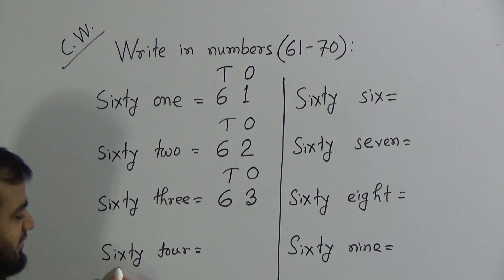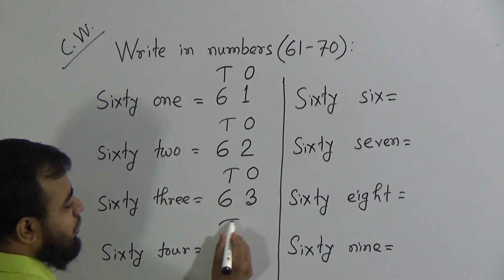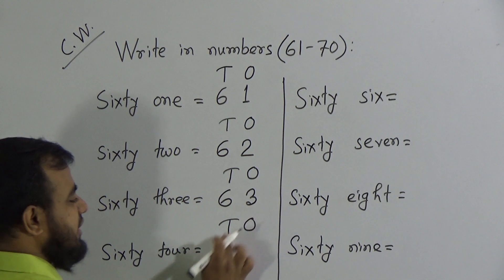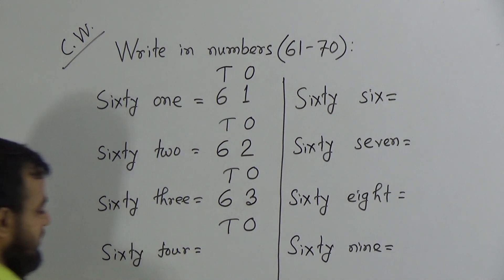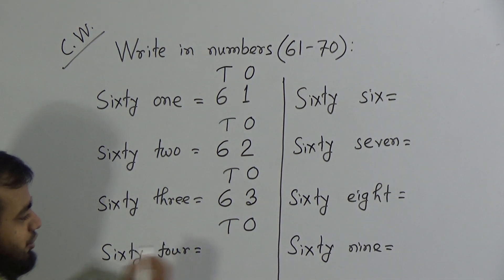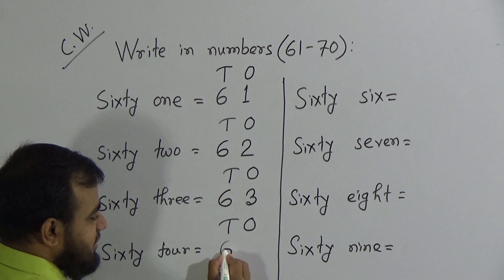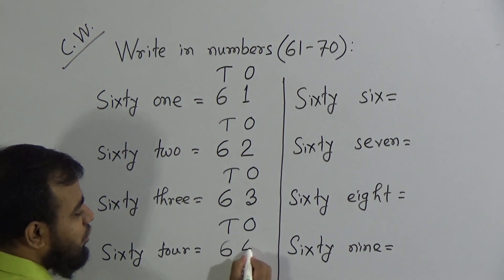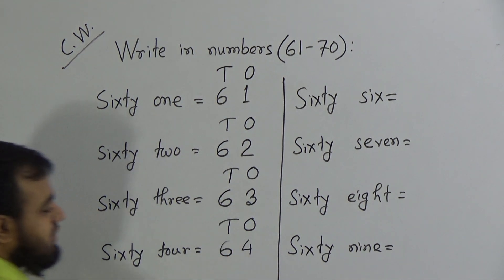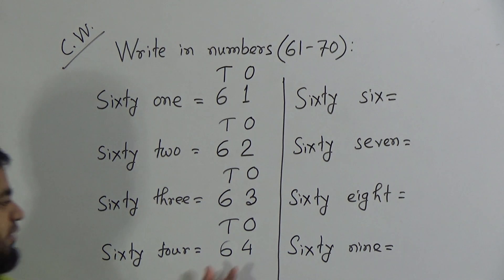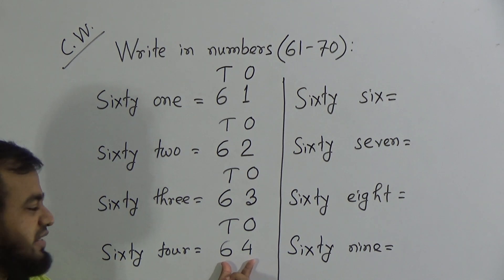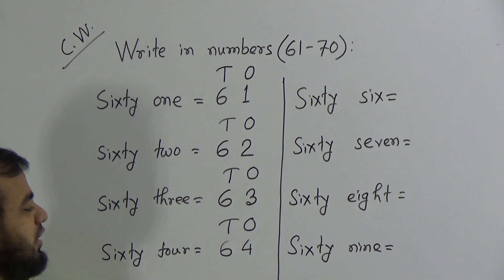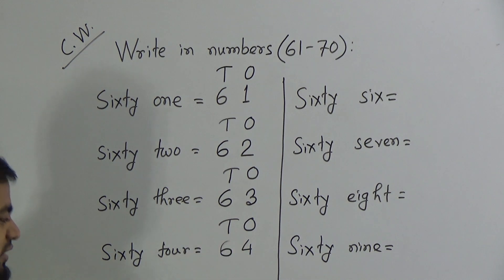Next number is 64. To write down the number, we indicate the place value tens and ones. To write 60, we write 6 in the tens place. To write 4, we write 4 in the ones place. Six and four makes the number 64, or basically you can say six tens and four ones makes the number 64.